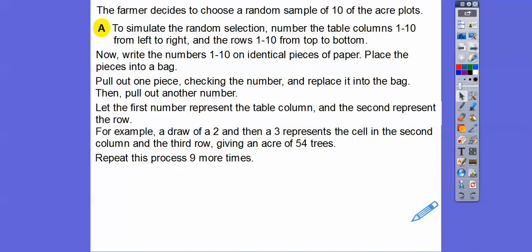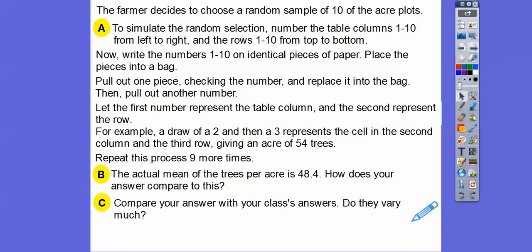And so what we can do is do that and record all the data and the actual mean of all those hundred trees is 48.4 trees per acre. So how does your answer compare to that right there? So you're going to have to compare your answers with your classmates and everybody's going to be different, but if you do that 10 times, you should get a pretty close estimation of the 48.4. All right, you guys, I hope that makes sense and take care.